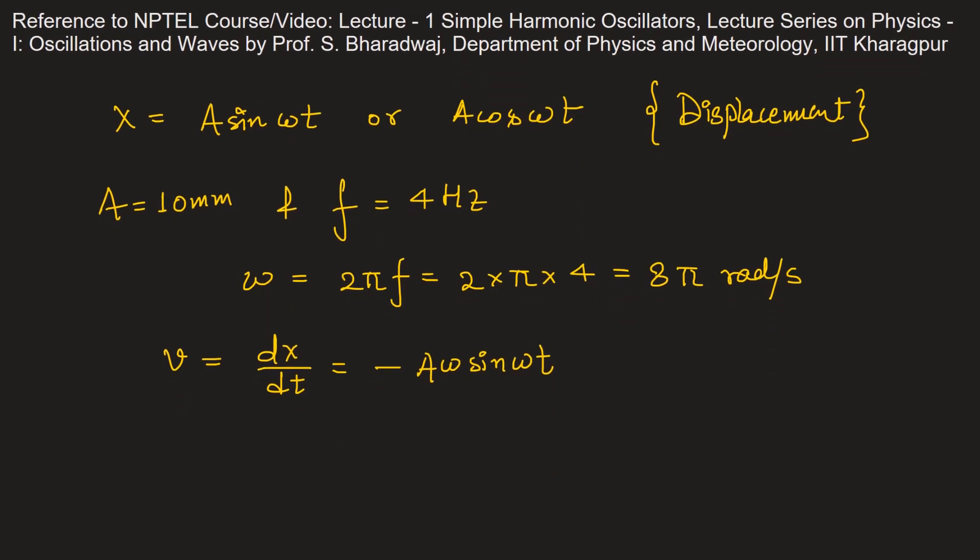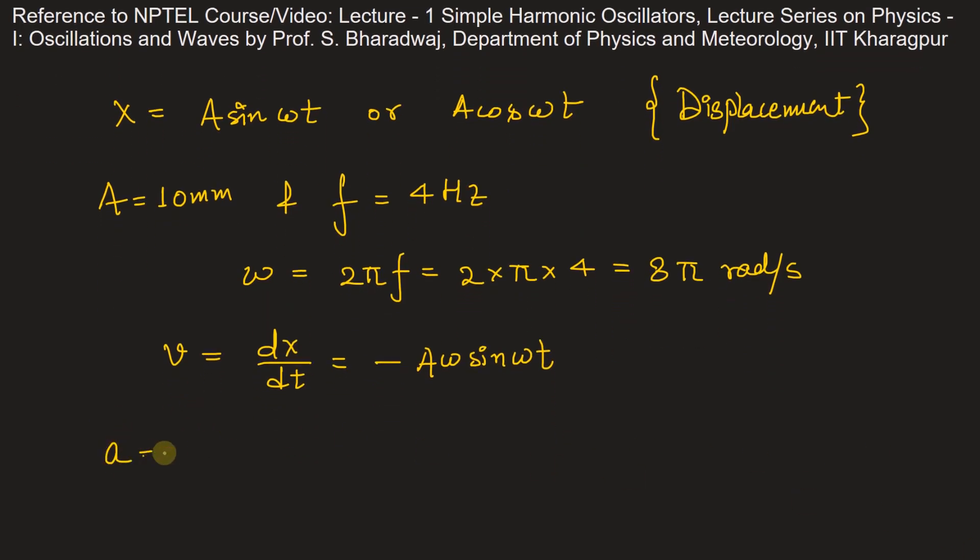Acceleration a will be dv by dt, which is equal to d2x by dt squared, the second derivative of the displacement. This will be negative A omega square cos omega t.